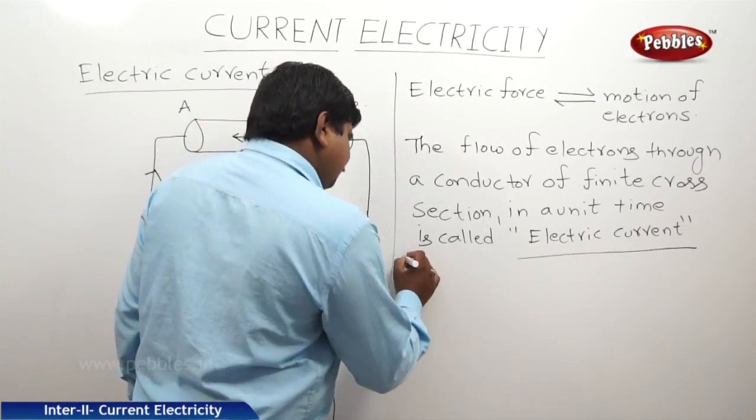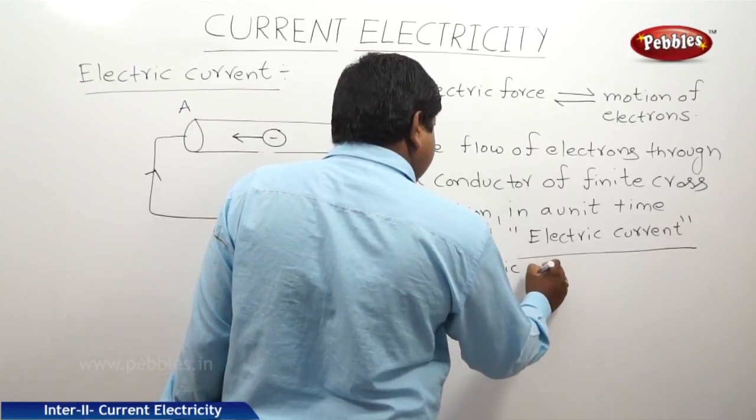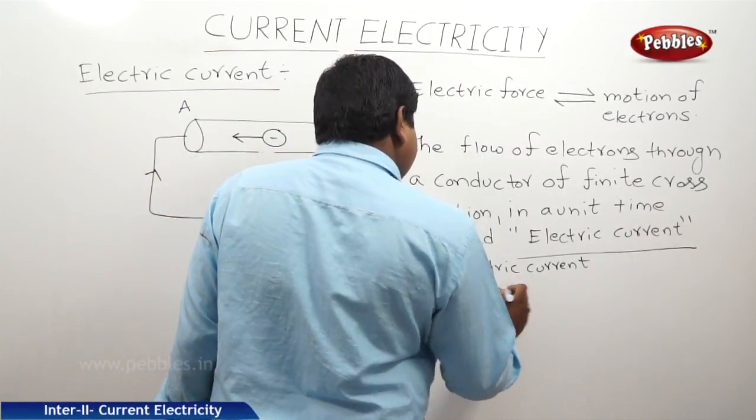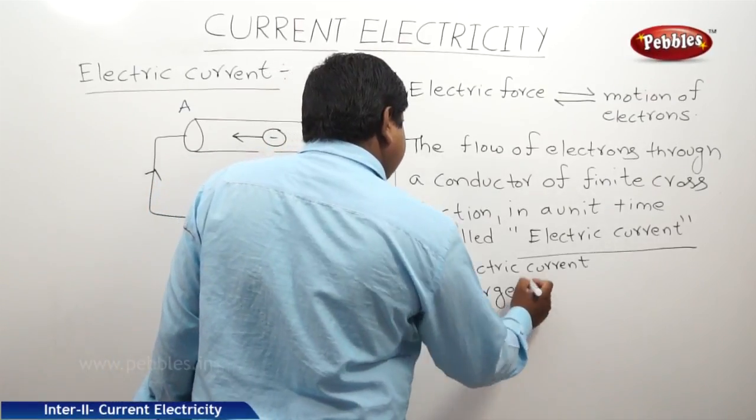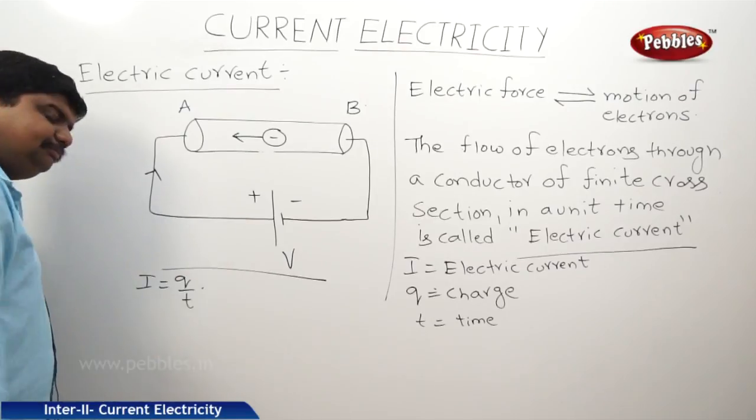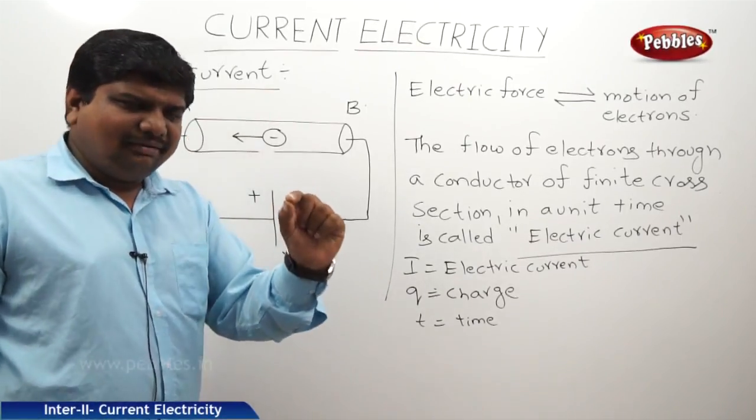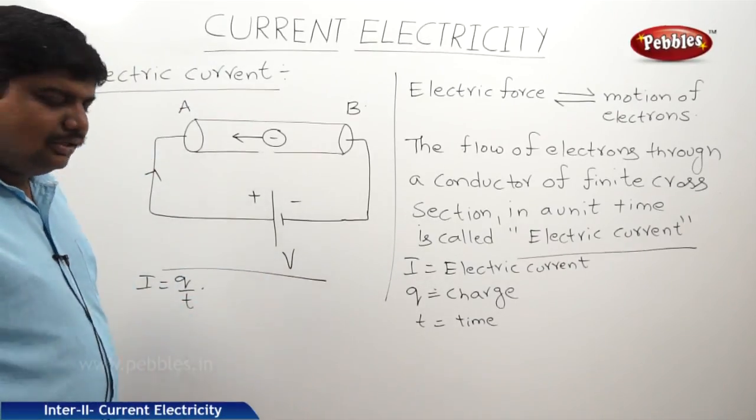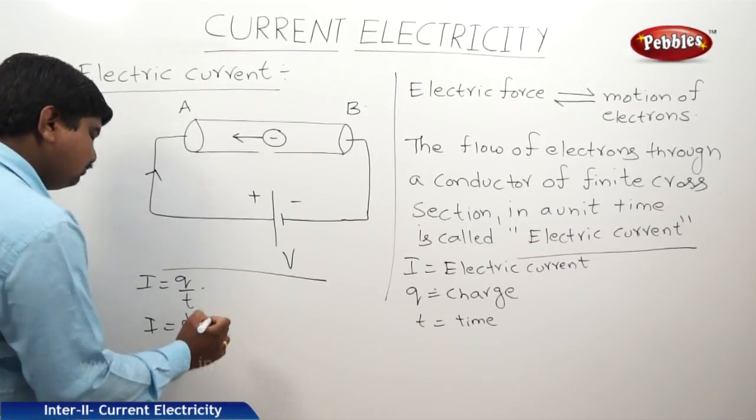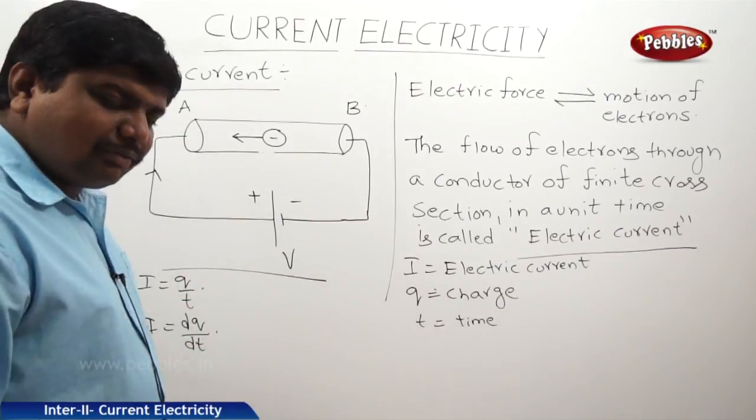The symbol of electric current is I. I is equal to electric current. Q is the symbol of charge. T is the symbol of time. Therefore, from this definition, we can write I is equal to Q by T. Suppose, if we took instantaneous current, the electrons travel at a particular time, then instantaneous current will be I is equal to dQ by dT. Like this, we can define the electric current. Now, we will check the units and dimensional formula of the electric current.